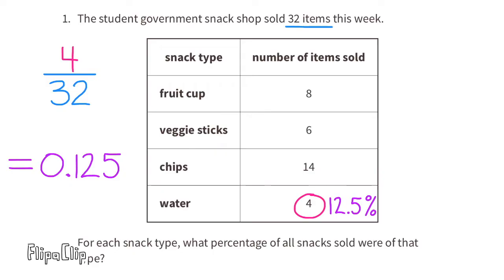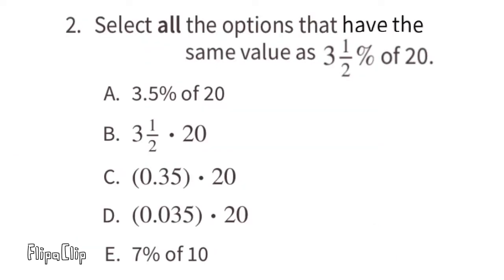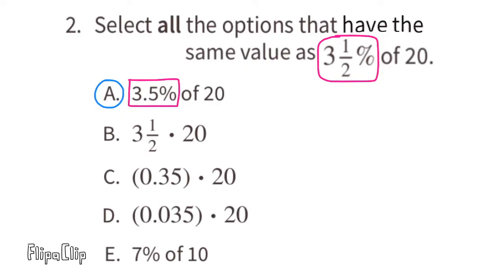Problem number two: select all the options that have the same value as three and a half percent of 20. Option A: 3.5 percent of 20. Three point five percent is the same as three and a half percent, so we can select A, since it is equal to three and a half percent of 20.